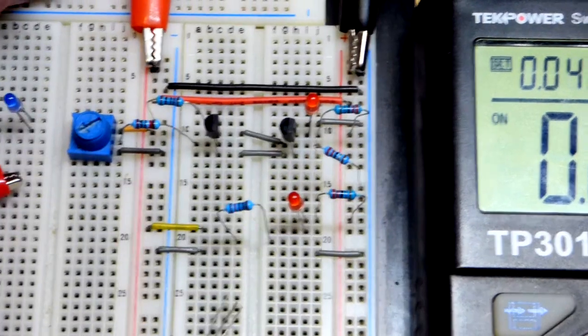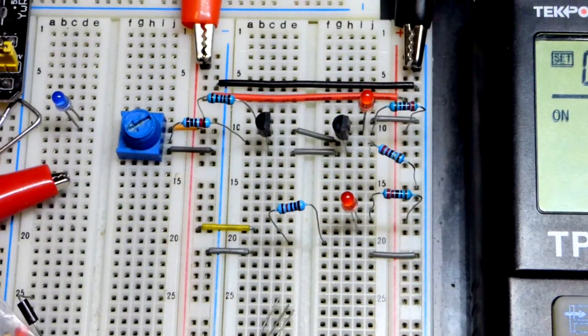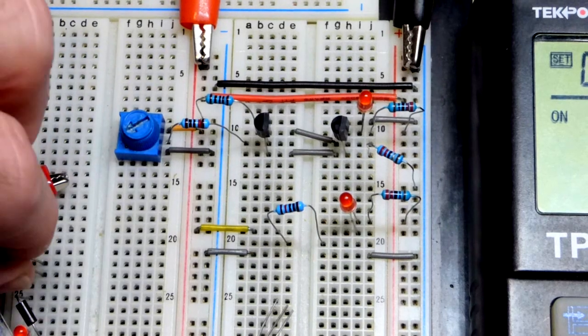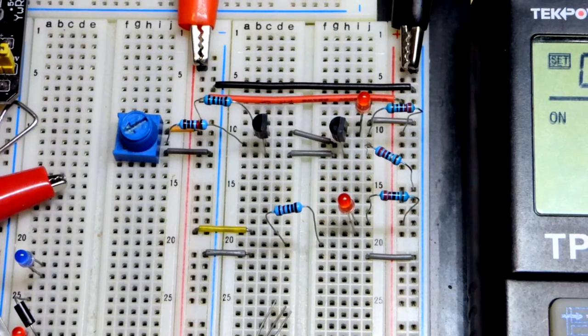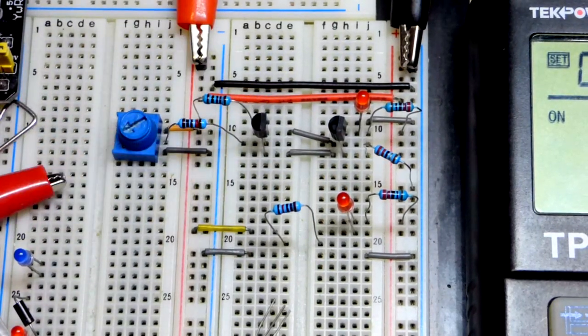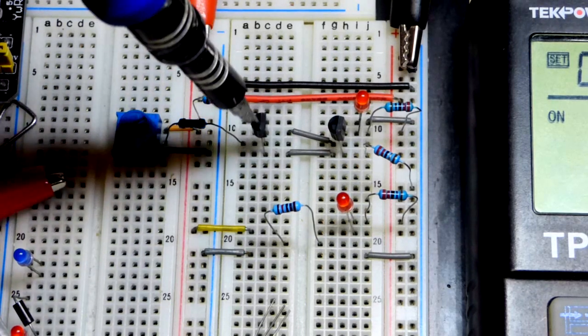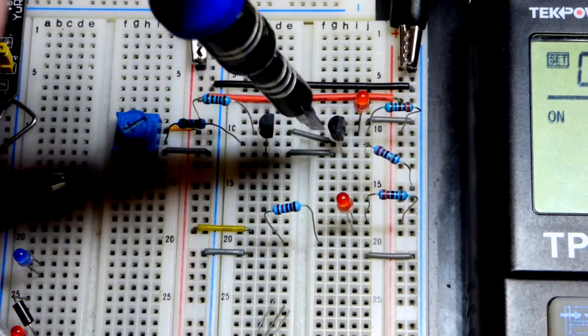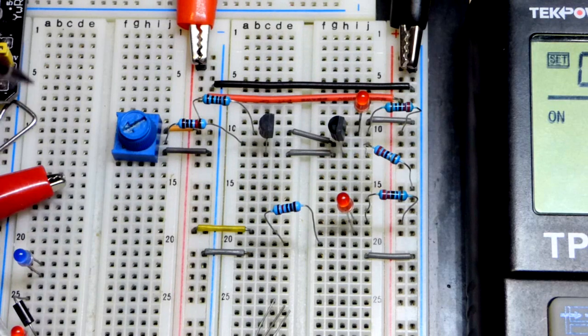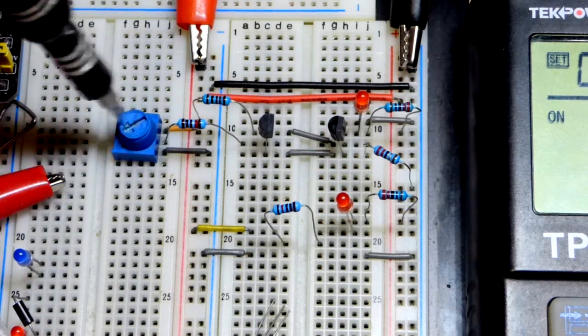So our signal is about the same here when it comes to the trim pot setting, the voltage that we are giving the base of the NPN bipolar junction transistor. So that's the first one. Now we have another one right there. We'll look at the schematics later on.